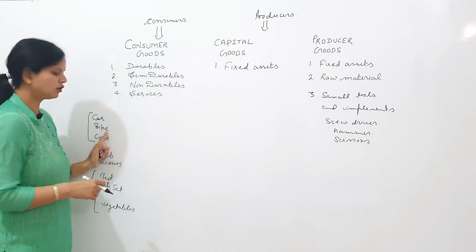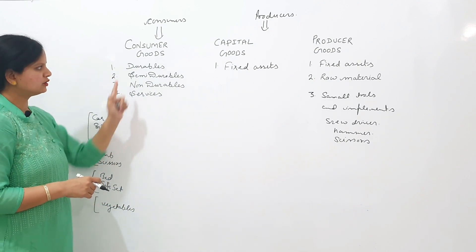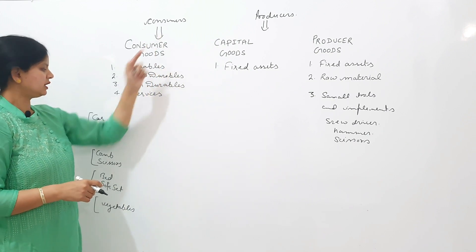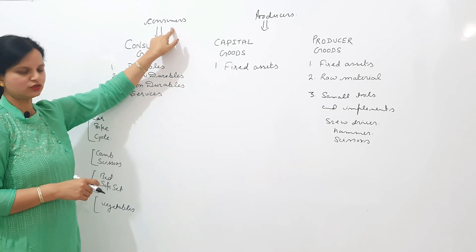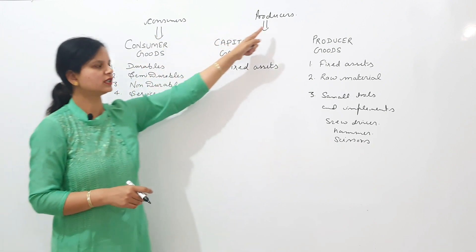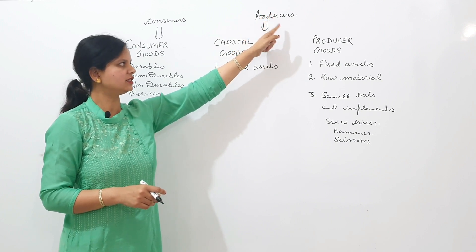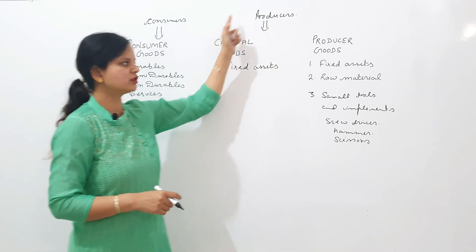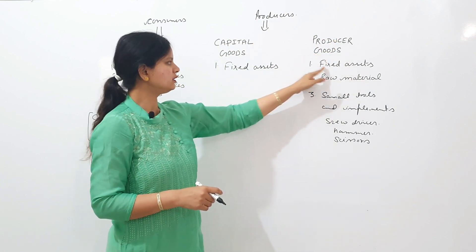Now the example of bike. Whether a bike is a consumer good, capital good, or producer good depends on the end user. If a bike is purchased by a consumer, then it is a consumer good. And if a bike is purchased by a producer for further production — like a tourism company purchases a bike — then it is a capital good, and it is a producer good too, because producer good includes fixed assets also.